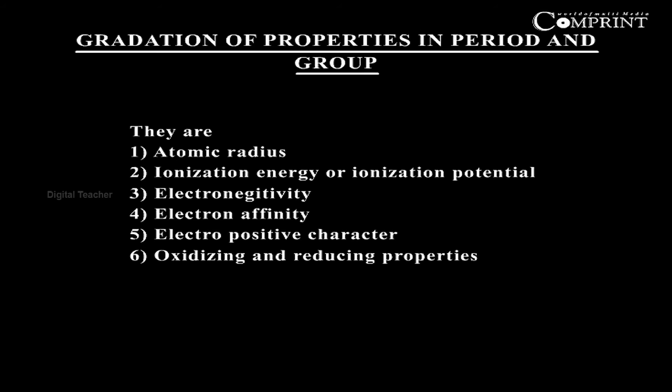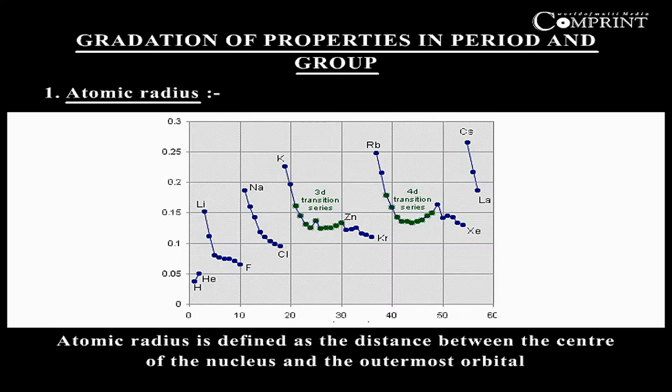Gradation of properties in period and group. The properties discussed are: atomic radius, ionization energy or ionization potential, electronegativity, electron affinity, electropositive character, and oxidizing and reducing properties.